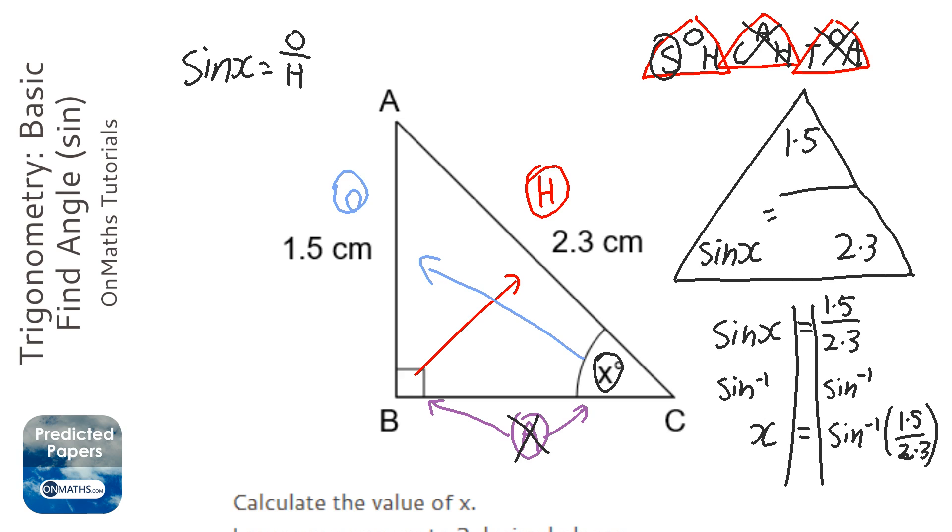Now, to do this on the calculator, you click shift, or second function, sin. And it should say a little sin with a minus 1 to the power of. And then you type 1.5 over 2.3, or 1.5 divided by 2.3. Don't forget to close the bracket.